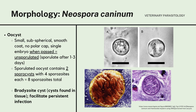This is the morphology of Neospora caninum. It belongs to the family Sarcocystidae and it is an oocyst with small subspherical smooth coat and no polar cap. It is a single embryo when passed or unsporulated and will sporulate for about 1 to 3 days after. The sporulated oocyst contains 2 sporocysts with 4 sporozoites each, and has 8 sporozoites in total.